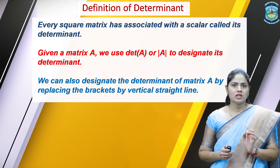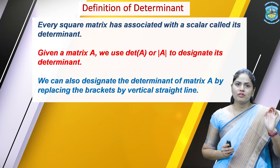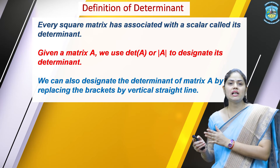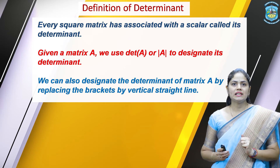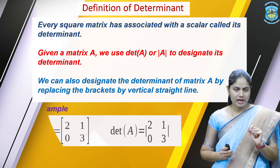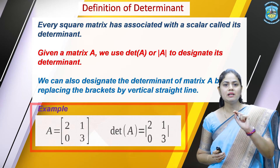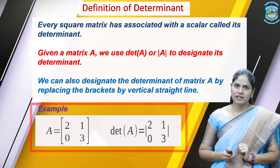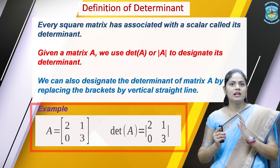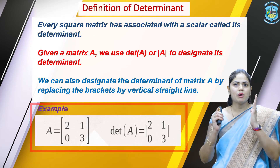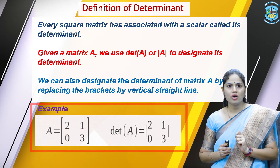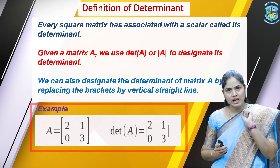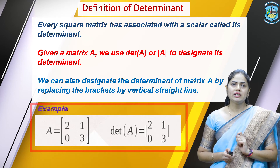We can also designate the determinant of a matrix A by replacing the brackets by vertical straight lines. Capital A denotes the matrix, represented by square brackets, while when we represent it as a determinant, the brackets are replaced by vertical straight lines. You can also use det(A). This also represents the determinant.